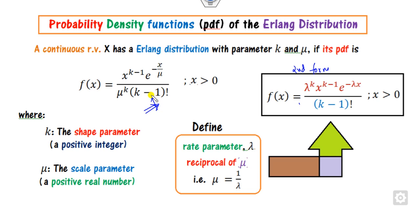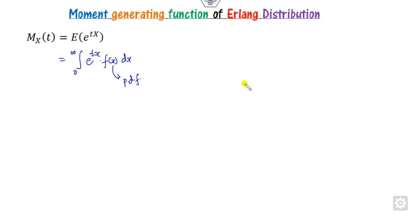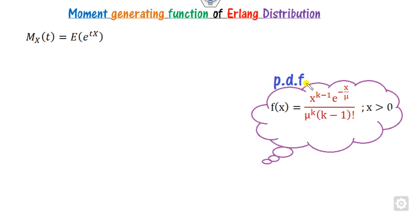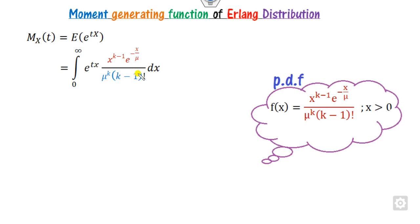You can solve the MGF for this distribution similarly using either form. I have taken the PDF in terms of mu. After substituting, you get an integration with respect to x, and the constant part can be taken outside the integral.